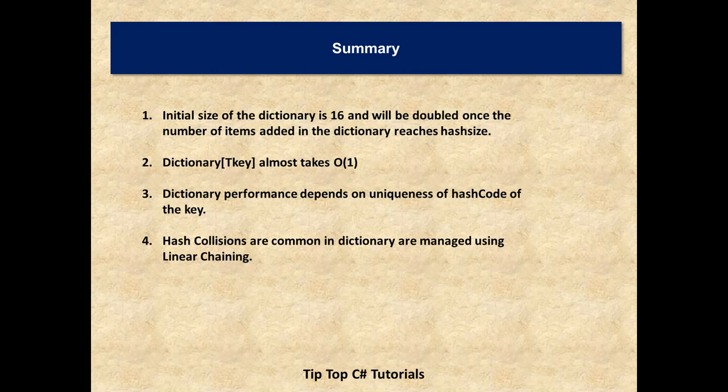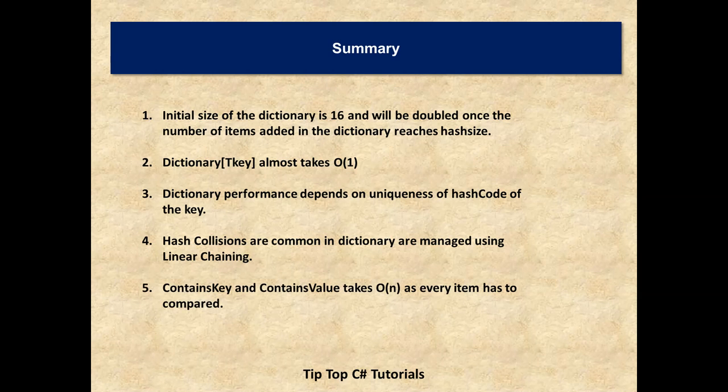Hash collisions are common in the dictionary and are managed by using linear chain. Contains key and contains value takes big O of n which must be avoided in most of the cases because each and every key has to be compared within the dictionary or each and every item has to be compared within the dictionary.